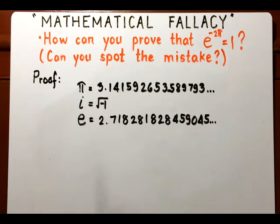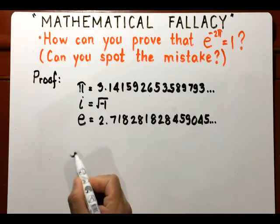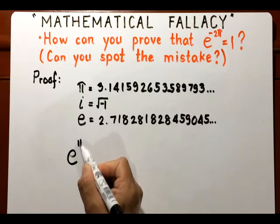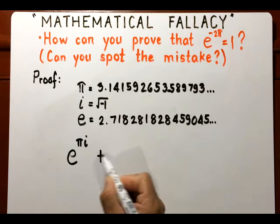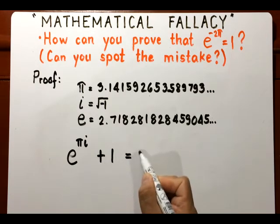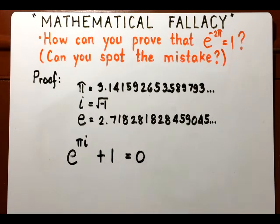Now, why is it that I am talking about this number? Because these three beautiful numbers were joined in the very beautiful equation of Euler called Euler's identity, which is e to the power πi plus one is equal to zero.